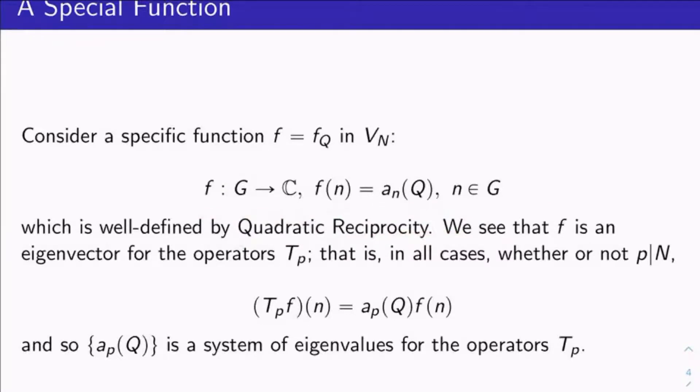And we see, this is, again, a very easy exercise I would encourage you to do. f is an eigenvector for the operators T_p. This f I chose, it's an eigenvector for the operators T_p I defined above for each prime p.